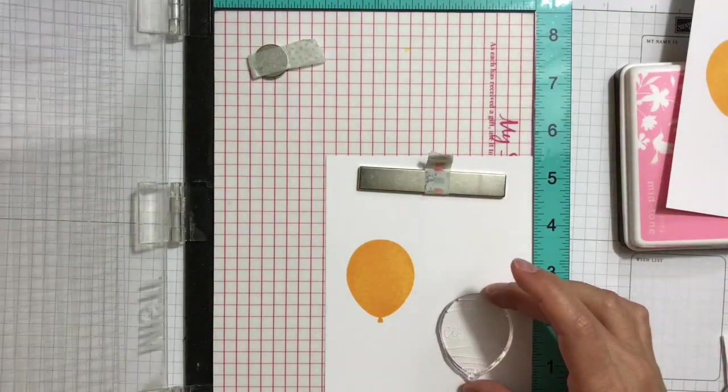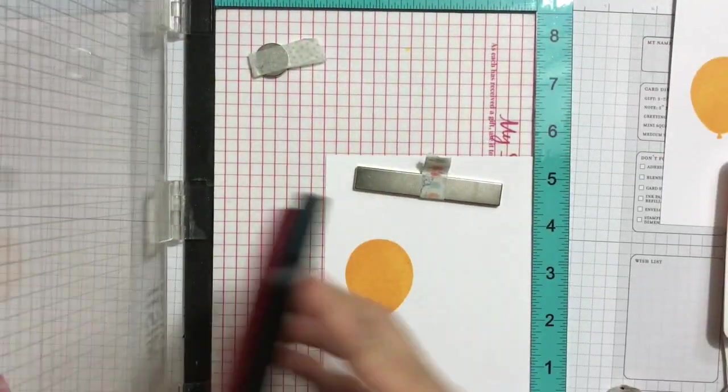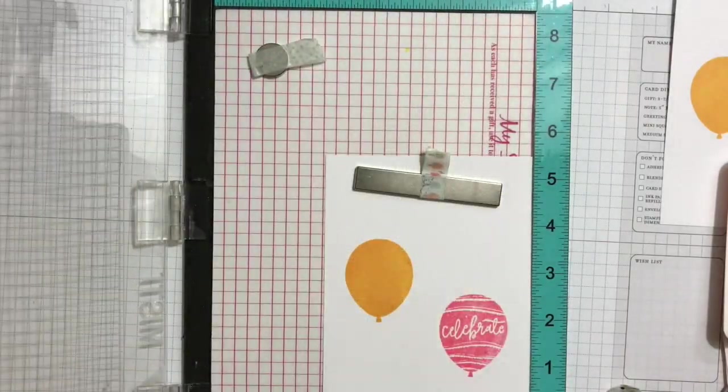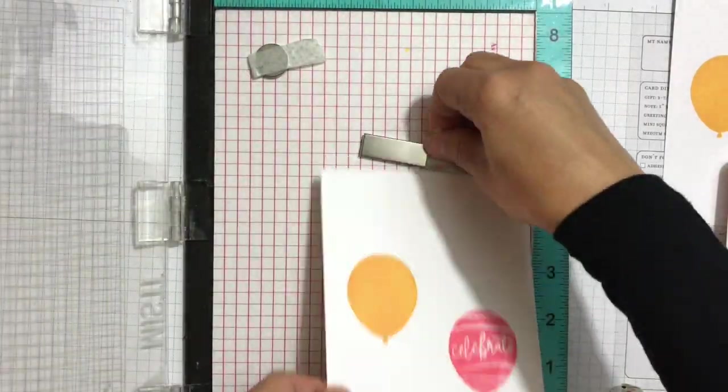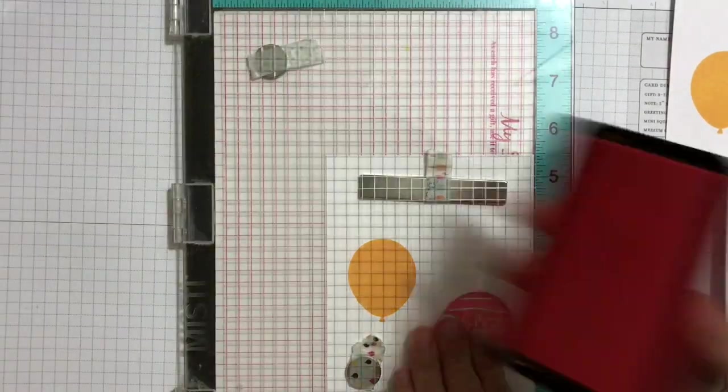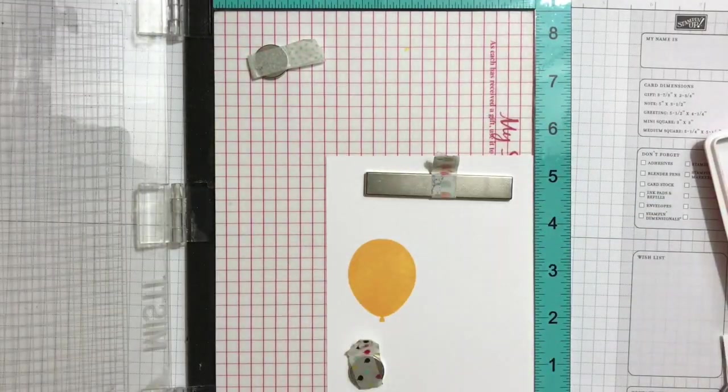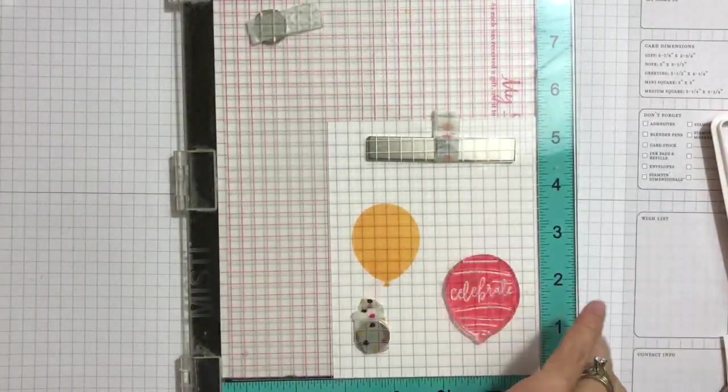Next I'm using the other balloon that says celebrate and I'm using the cotton candy ink pad to stamp that one. And you notice here I'm stamping twice to get more solid and more saturated image.